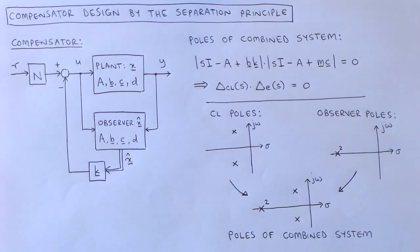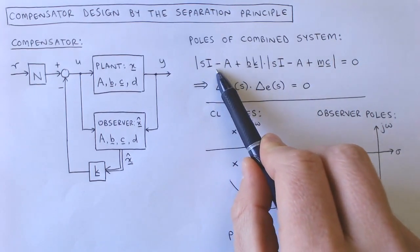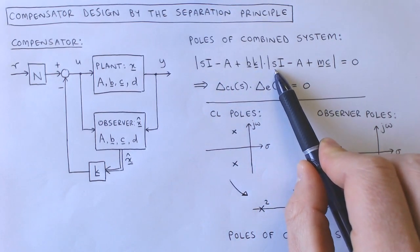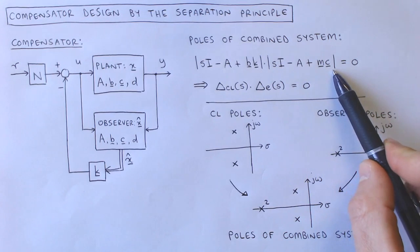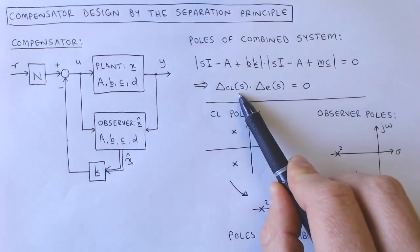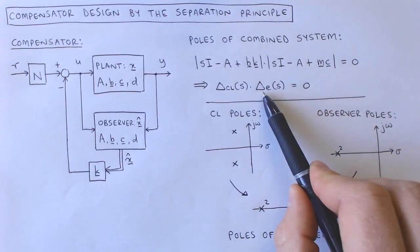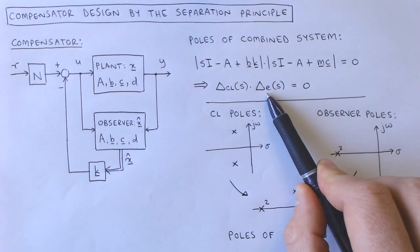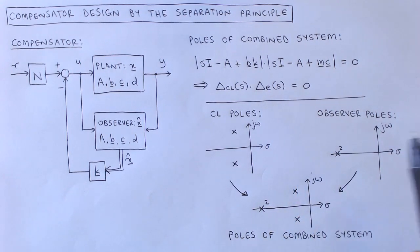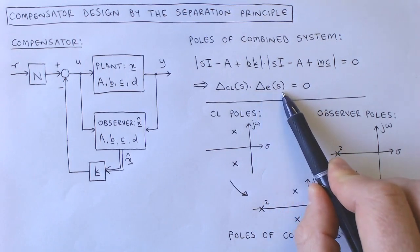The dynamics of the combined system is described by its poles. It can be shown that the poles of the combined system are given by the roots of this characteristic equation, where the characteristic polynomial is the determinant of (sI − A + BK) times the determinant of (sI − A + MC). We recognize the determinant of (sI − A + BK) as the closed-loop characteristic polynomial. The characteristic polynomial of the combined system is therefore the product of the closed-loop characteristic polynomial and the observer characteristic polynomial.